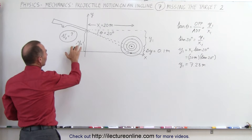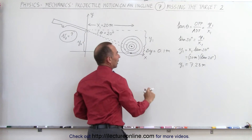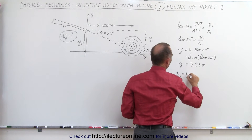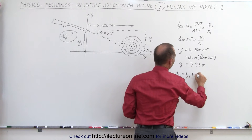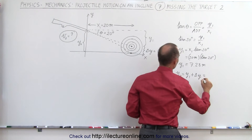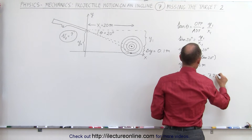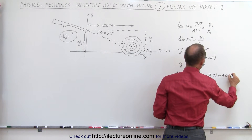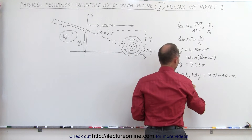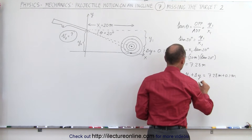Then we realize that y0 is simply y1 plus delta y, so therefore y0 equals y1 plus delta y, which is equal to 7.28 meters plus 0.1 meter, and y0, therefore, is 7.38 meters.